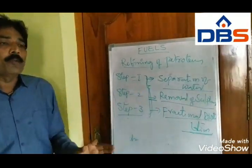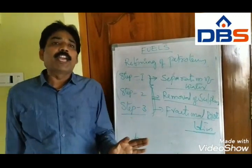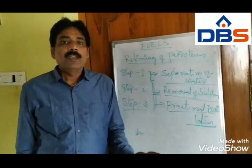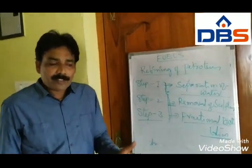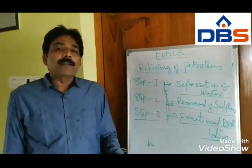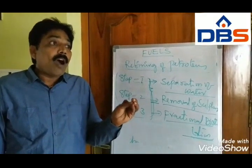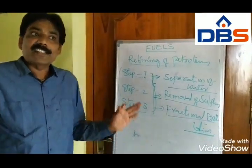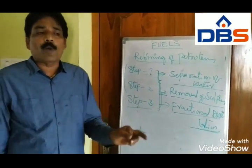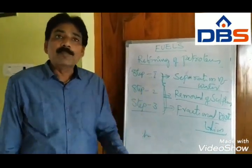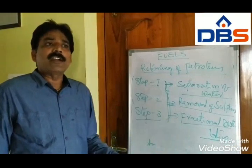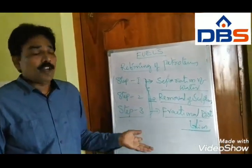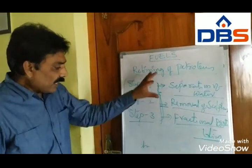The crude oil is taken in a stainless steel tall retort. The retort contains horizontal stainless steel trays. Every tray is provided with a small chimney. The chimney is covered by a loose cap.